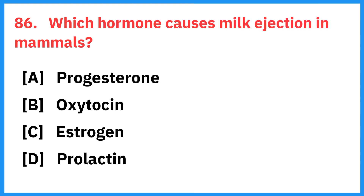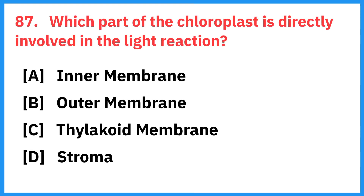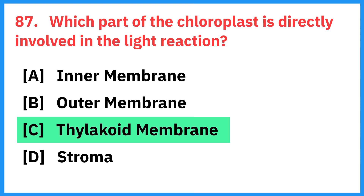Which hormone causes milk ejection in mammals? Right answer is oxytocin. Which part of the chloroplast is directly involved in the light reaction? Right answer is thylakoid membrane.